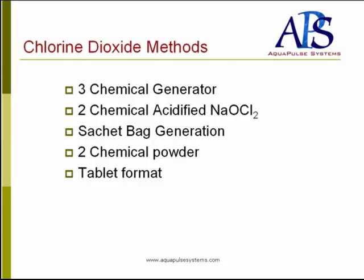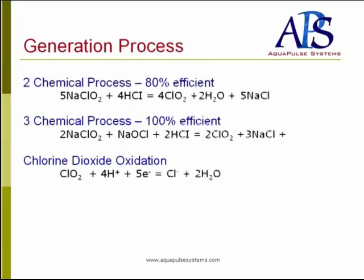There are several methods for making chlorine dioxide: the three-chemical generator method, the two-chemical acidified sodium chlorite, the sachet bag generation, two-chemical powders, and a smaller dose tablet format. The two-chemical process combines sodium chlorite with hydrochloric acid at 15%, and is about 80% efficient, as you can see from the reaction equation.